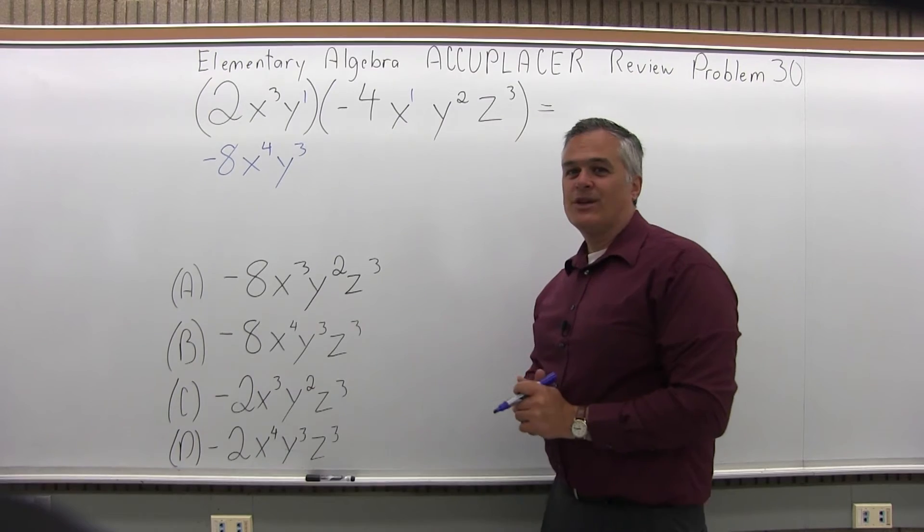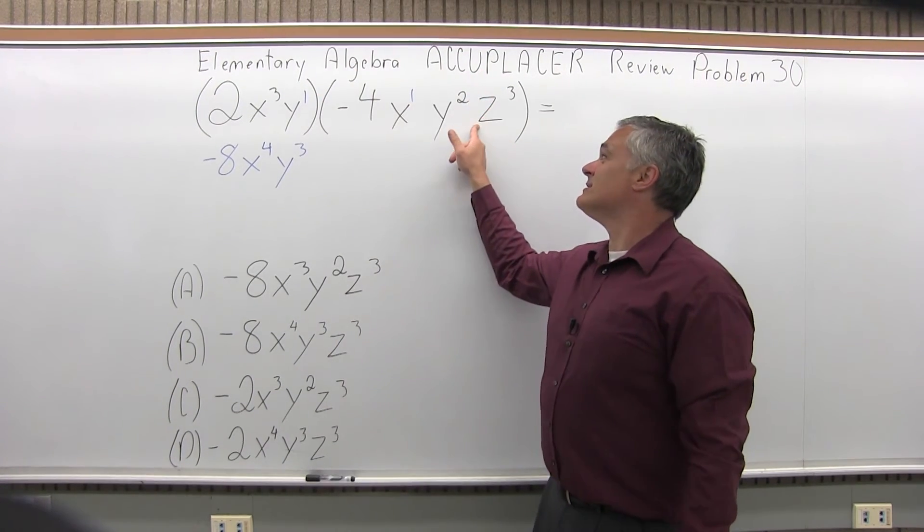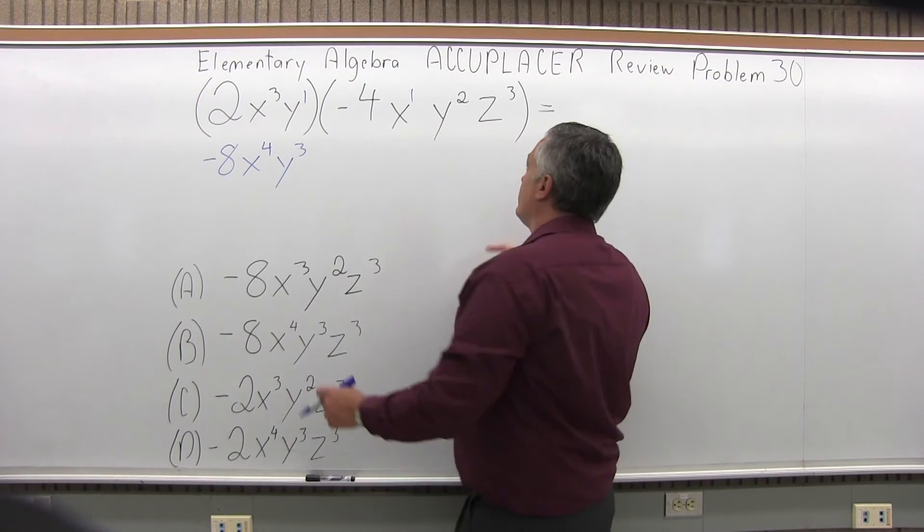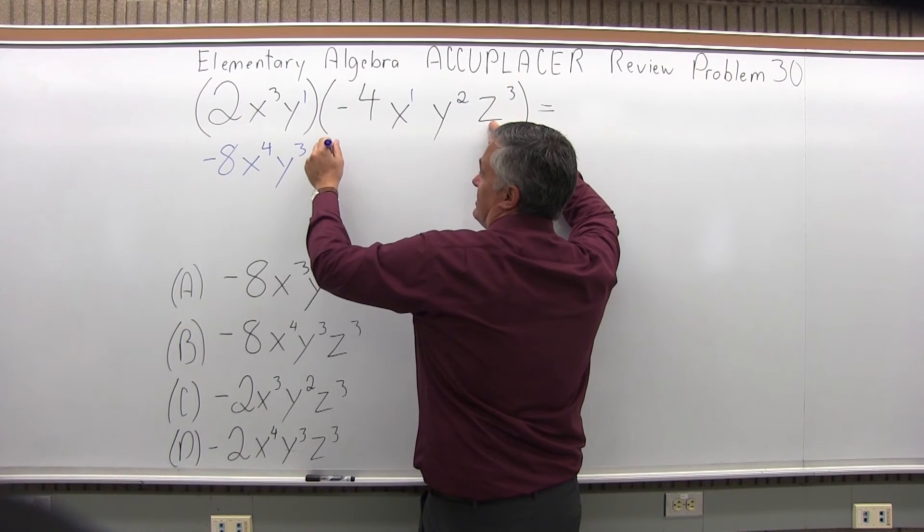Now here's an interesting thing: one set of parentheses has no z and the other one has a z. So what do we do with that? Well, it's multiplied. You have a z³ times no z at all here, so it just stays z³.